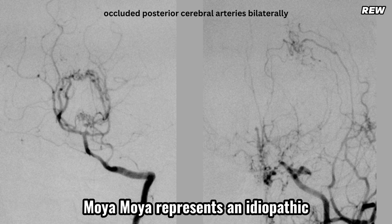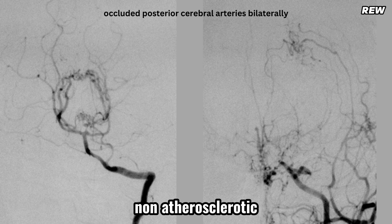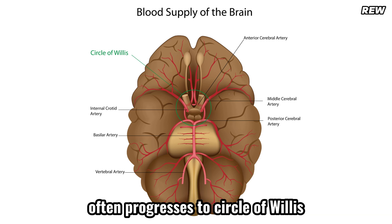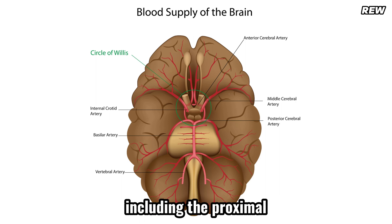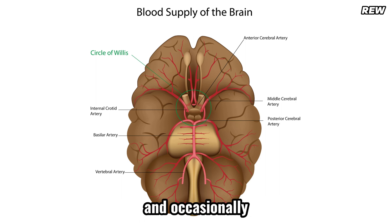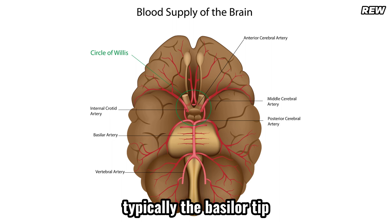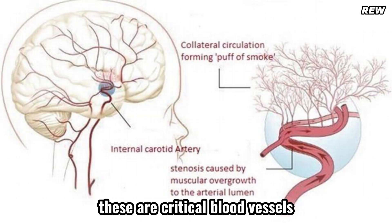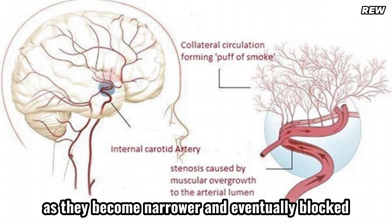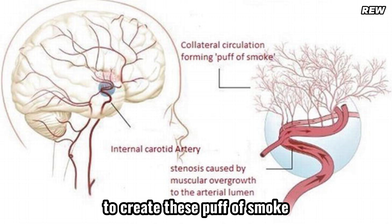Moya Moya represents an idiopathic, non-inflammatory, non-atherosclerotic progressive arteriopathy, primarily involving the terminal supraclinoid internal carotid arteries, often progressing to the circle of Willis, including the proximal anterior and middle cerebral arteries, and occasionally the posterior circulation, typically the basilar tip. These are critical blood vessels that supply the brain. As they become narrower and eventually blocked, the body's response is to create these puff-of-smoke collateral vessels.